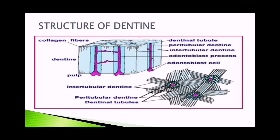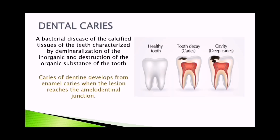Here is a diagrammatic representation of the structure of dentine. We have dentinal tubules; around the dentinal tubule we have peritubular dentine, and between the peritubular dentine we have intertubular dentine. Dental caries is a bacterial disease of the calcified tissue of the teeth characterized by demineralization of